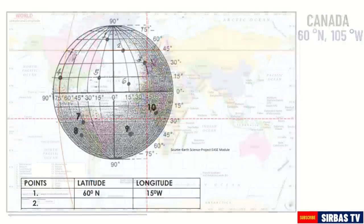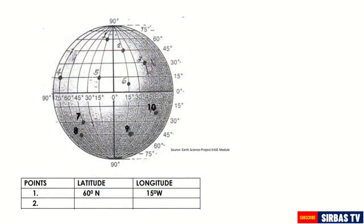For our last example, let us find the latitude and longitude coordinates of point number 2. To get the latitude coordinate, we need to draw a horizontal line on the point. In this case, we have 45 degrees north. For the longitude coordinate, we need to draw a vertical line on the point. Hence, the coordinate is 15 degrees east.